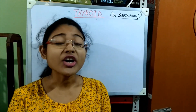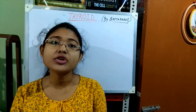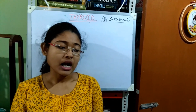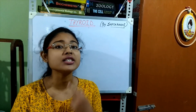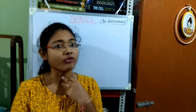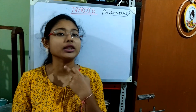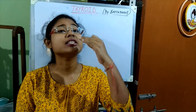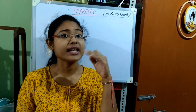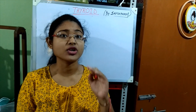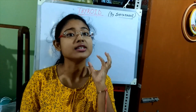For any gland, it is very important to know their location. Our thyroid gland is situated just in front of our neck, just below the larynx. The larynx is the structure inside which your voice box is situated.